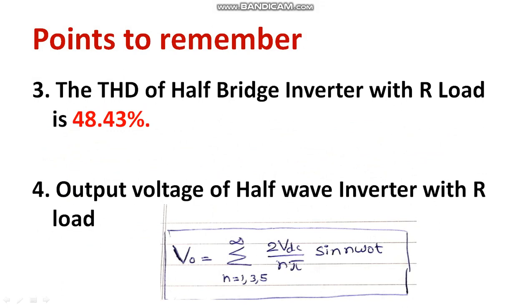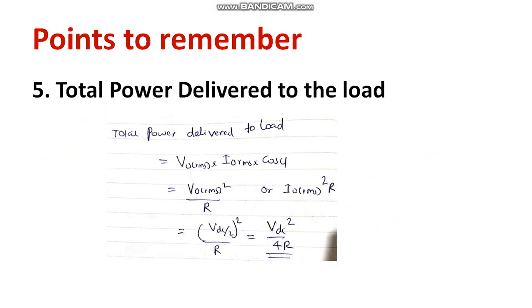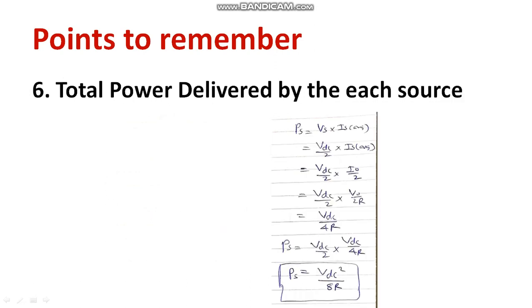You have to replace values with the RMS and peak values accordingly. The total power delivered to the load is equal to Vdc² / 4R. And the total power delivered by each source is given by Vdc² / 8R, because two sources are present in the circuit.